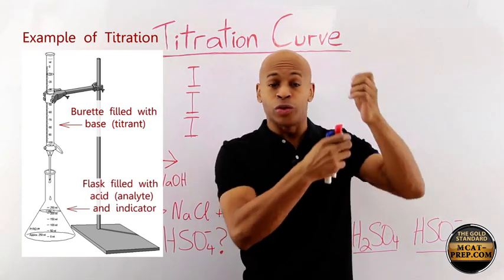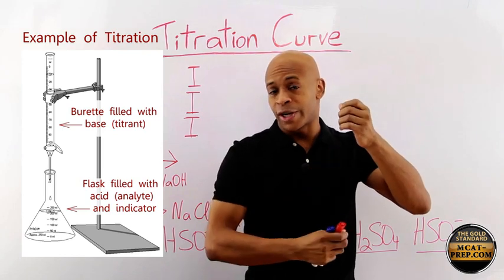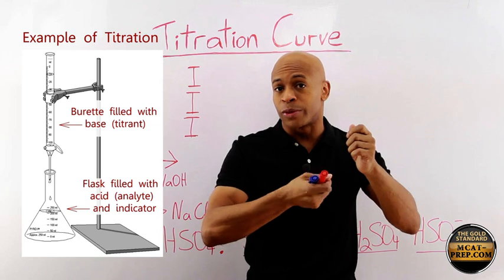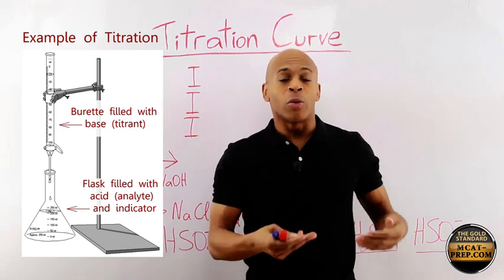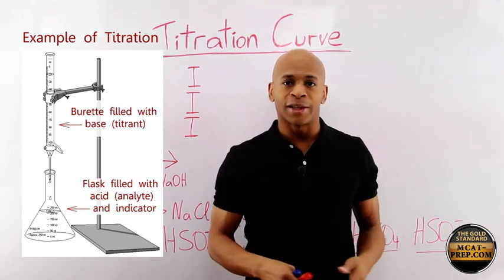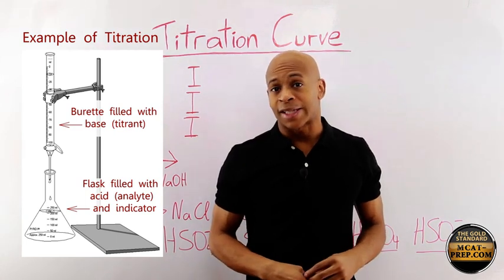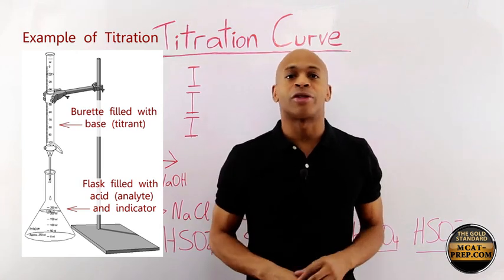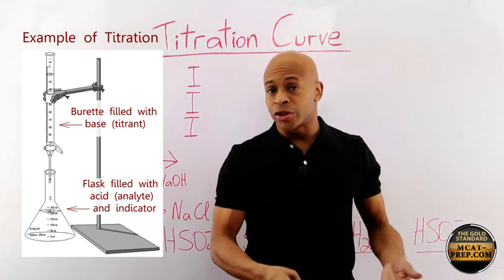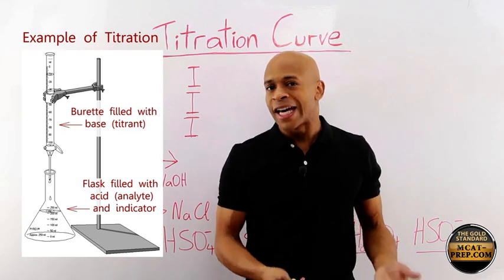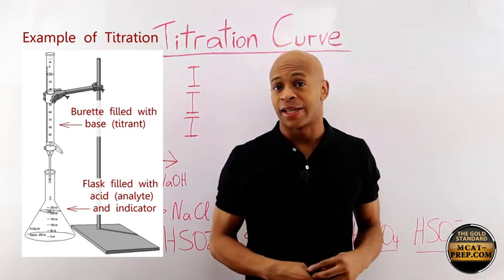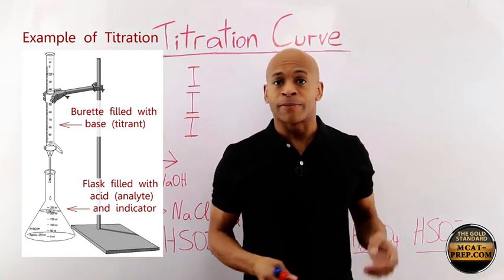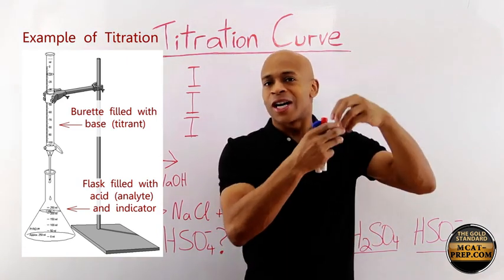You're able to determine the concentration because you know the liquid in the burette — its concentration and the volume you are adding — and then you just have to know when a reaction occurs in the flask. Once you know that, you use stoichiometry to determine the concentration of the analyte, which is the liquid in the flask.